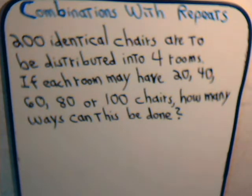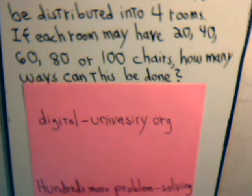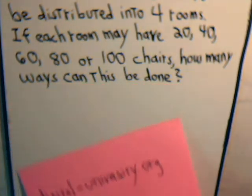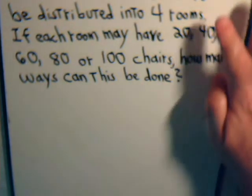We're going to approach this problem using an ordinary generating function, and we'll probably have to split the video into two parts. If you just found us on YouTube, you can go to the website at digital-university.org, where all the videos concerning different combination problems, permutations, and generating functions are available in their proper sequence. Now for this one, we want to start with the generating function that describes the situation for one of the four rooms.